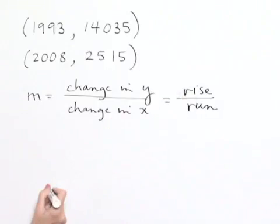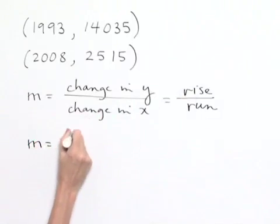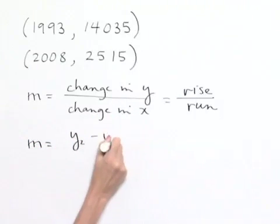To find the change in rise or change in Y value, what we're going to do is subtract our Y values. So we'll have Y sub 2 minus Y sub 1.